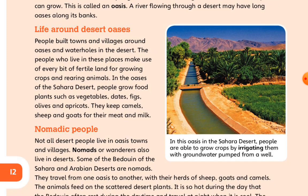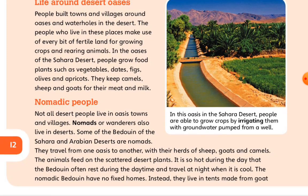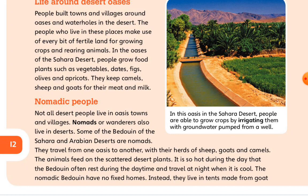This is called an oasis. A river flowing through a desert may have a long oasis along its banks. Life around desert oasis. People build towns and villages around oases and water holes in the desert. In the oasis of the Sahara Desert,